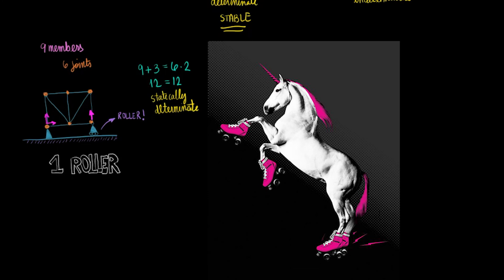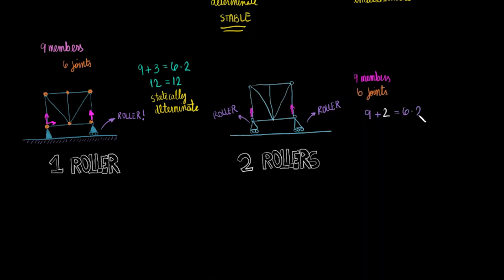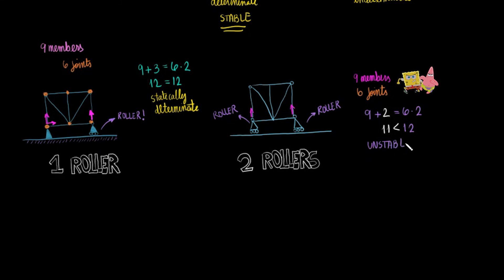Let's try a system with two rollers now. This system with two rollers can really slide. We only have two reaction forces, both directed along the y-axis. But just like before, we will count nine members and six joints. Because we now have less reaction forces, we end up with less unknowns. When we have less unknowns than the number of balance equations, our system is under-constrained and, consequently, unstable.